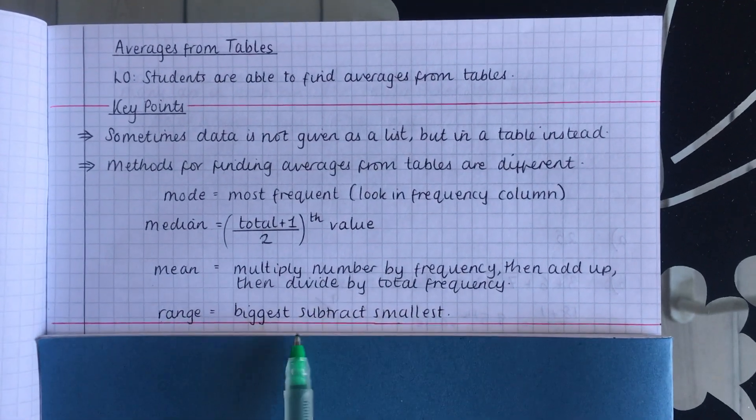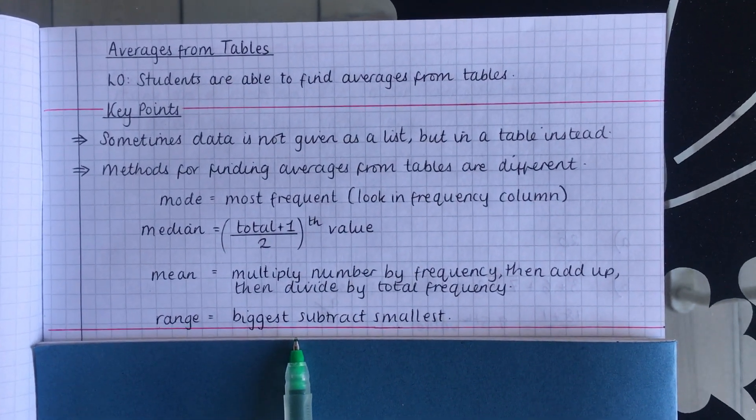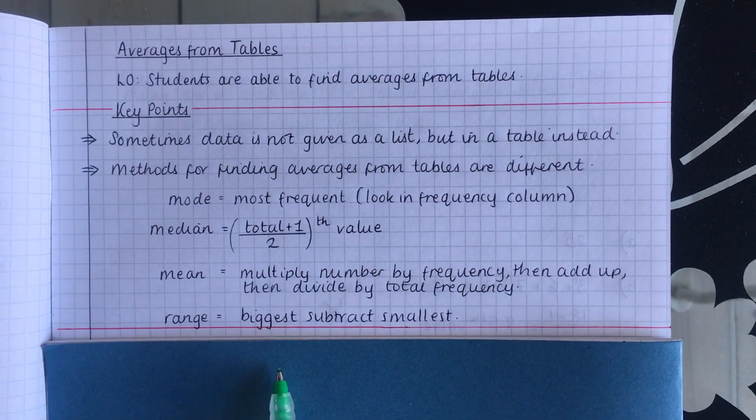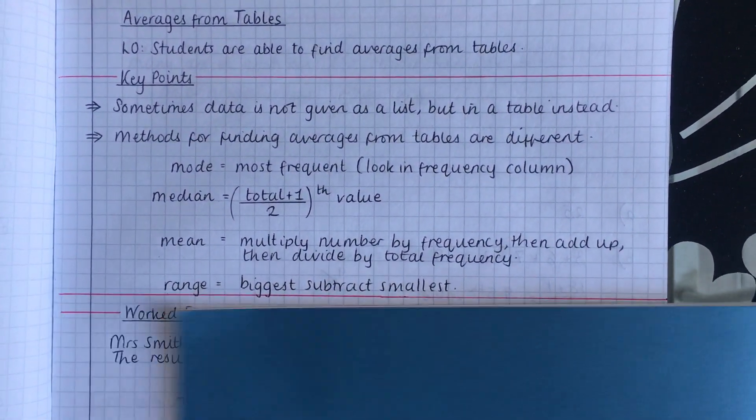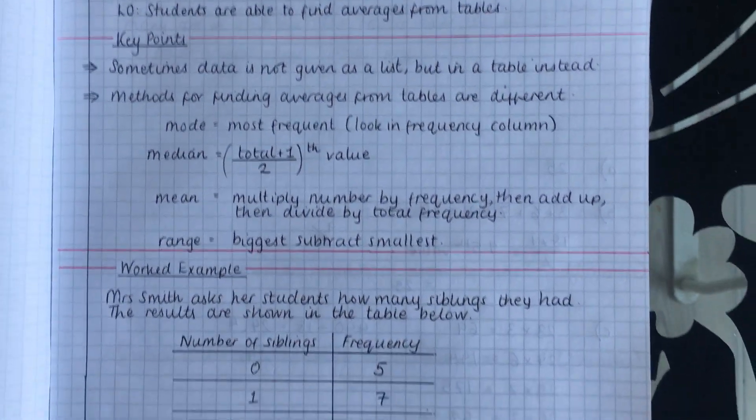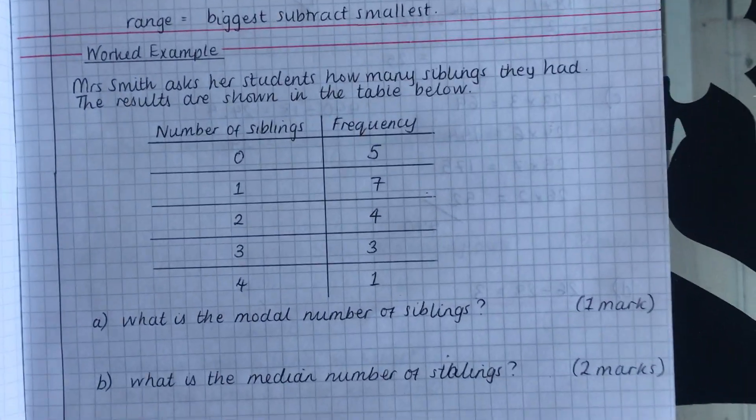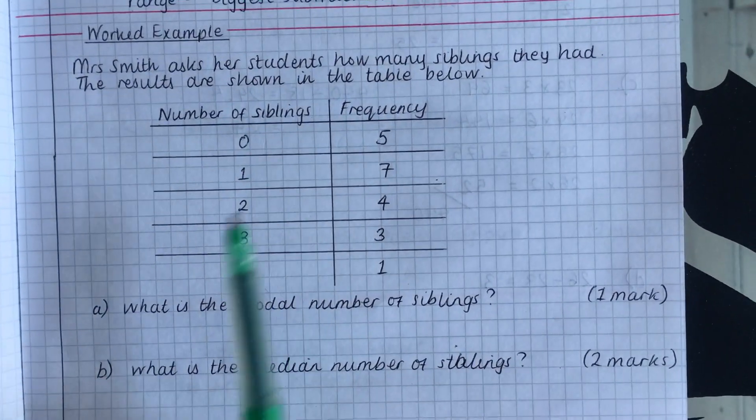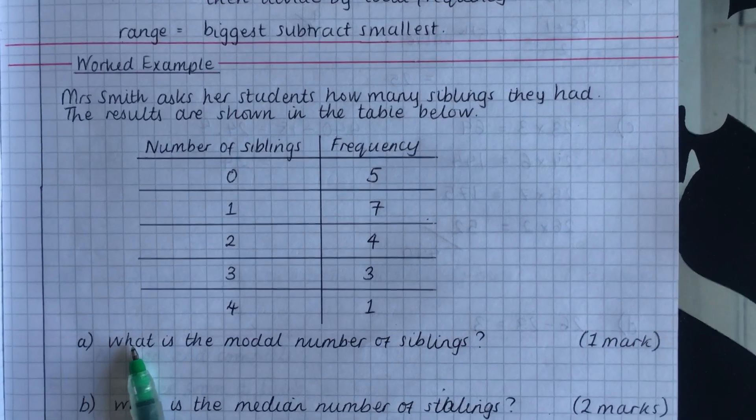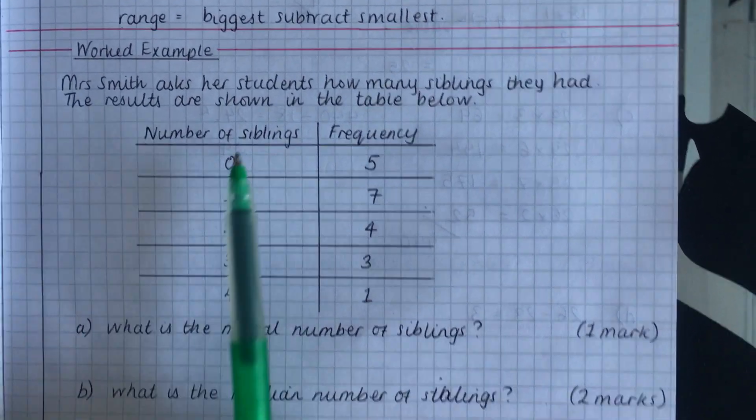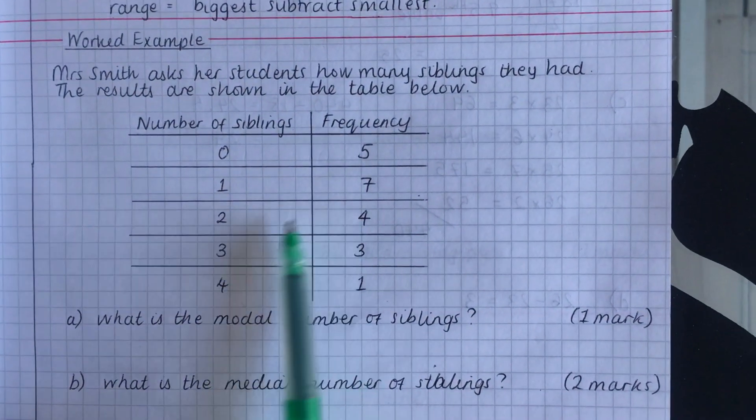The range is still just the biggest subtract the smallest. So get those key points written down and we're going to move on to an example now. So here's an example here. Mrs Smith asks her students how many siblings they had. The results are shown in the frequency table. So this is what I mean by results shown in a table rather than a list.